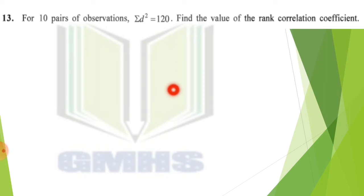For 10 pairs of observations, sigma D square is equal to 120. 10 pairs of observations, N is 10. And sigma D square is 120. Sigma D square means you have to use rank correlation coefficient method. If you have sigma D square given, then you don't confuse it. It means you have to use rank correlation formula.